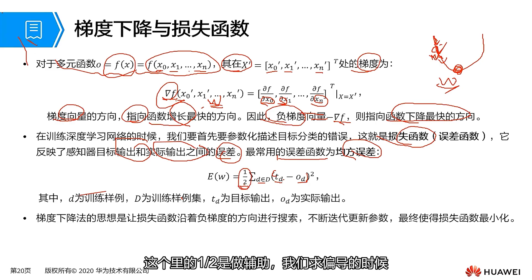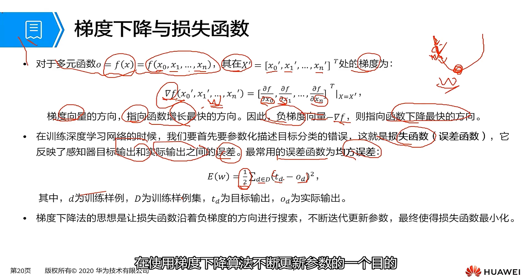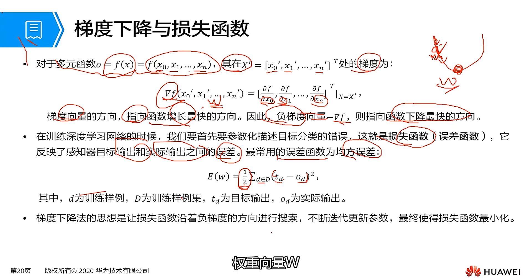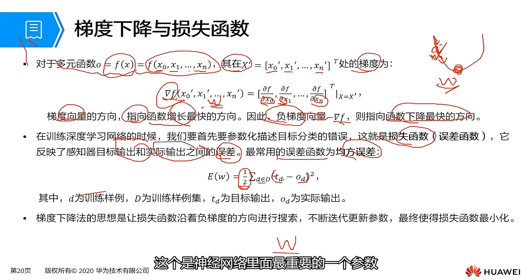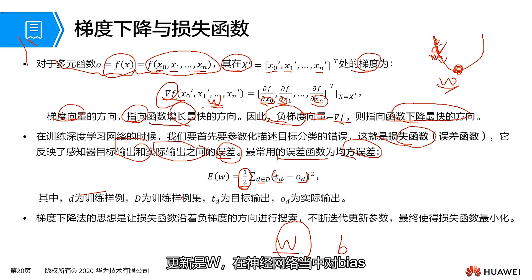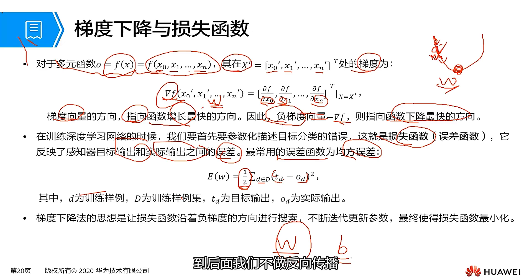One purpose of continuously updating parameters using the gradient descent algorithm is to make our loss function smaller and smaller. The weight vector w is certainly one of the most important parameters in our neural network. We also have other important parameters, such as b, but here we keep updating w. In neural networks, for bias, we only apply gradient descent algorithms and do not perform back propagation.